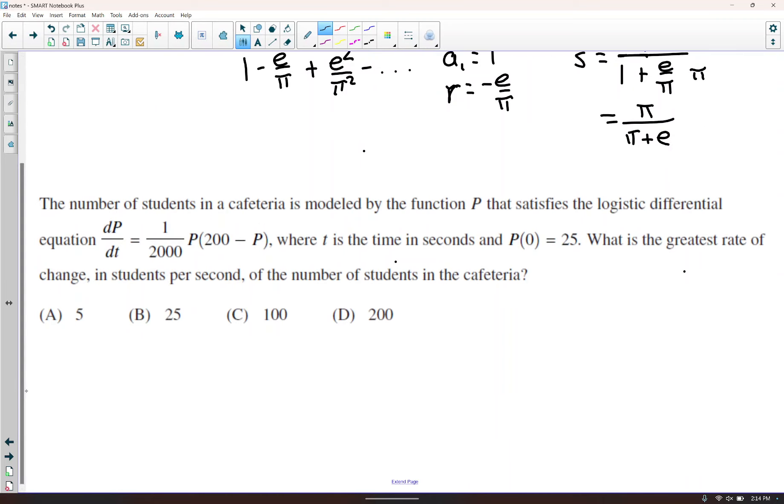The number of students in a cafeteria is modeled by the function p that satisfies the logistic differential equation, where t is time in seconds and p of 0 is 25. What is the greatest rate of change in students per second, the number of students in the cafeteria? So this piece is exponential, and then we have a limiting factor. So once the population reaches 200, the rate is going to end up being 0. So the maximum population is 200, and the fastest rate of that population is when the population is 100, when it's half of the carrying capacity. So dp/dt is the greatest when p is 100. So we'll put a 100 here, and 200 minus 100 is 100, so you end up with 10,000 over 2,000. Those cancel, and we're left with 5.